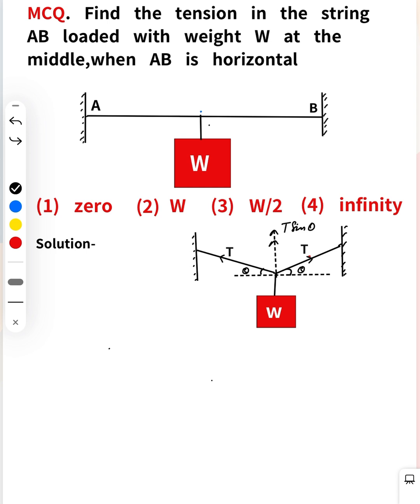So basically that is 2T sin theta in this direction, and T cos theta here and T cos theta there. Now the whole system is balanced, so 2T sin theta equals W. You can say that T equals W upon 2 sin theta.